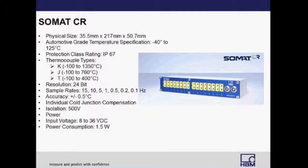Next is the SOMAT-CR, a rugged mobile CAN-based temperature data acquisition module. Engineered to operate within a temperature range of minus 40 to 80 degrees C with an IP67 protection class rating, the SOMAT-CR module allows users to take temperature measurements directly in the most difficult test objects. These modules can be placed in engine enclosures, gearboxes, pumps, power generation systems, and many industrial applications. Its modular design reduces installation time, cabling, and test setup while lowering overall product testing costs.